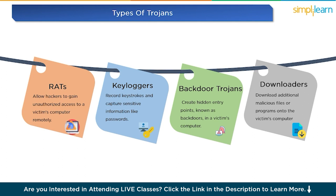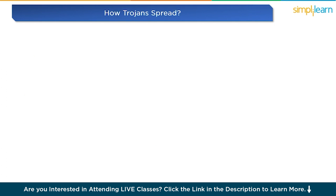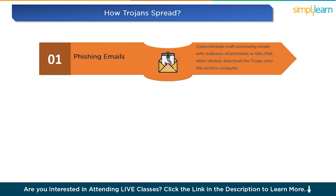So you might be wondering how Trojans spread in the first place. The first method is phishing emails. Phishing emails are one of the most common ways Trojans infiltrate systems. Cyber criminals craft convincing emails with malicious attachments or links that, when clicked, download the Trojan onto the victim's computer.